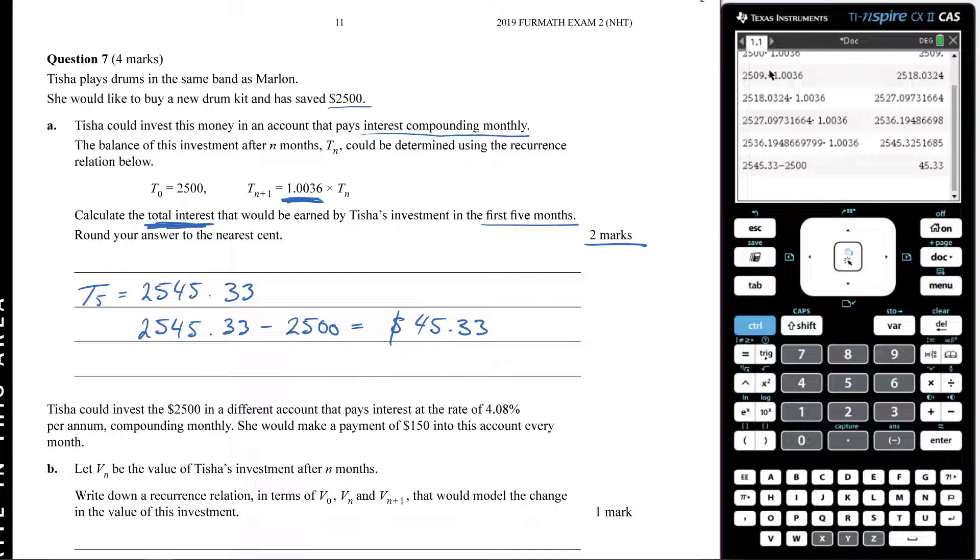As you can see, it's worth two marks. So I was sure to show kind of my thinking and what I did. Finding T5 there is important because if I was a guessing man, I would say that perhaps they awarded one mark if you found T5, but just forgot to subtract it away. That's just me guessing, but that is what I think for that.